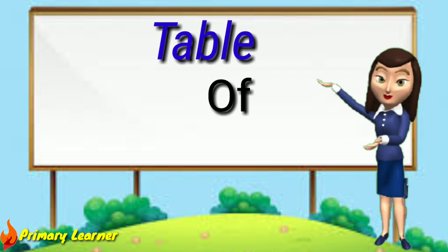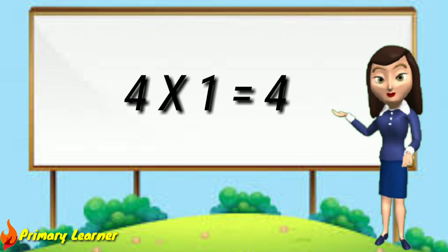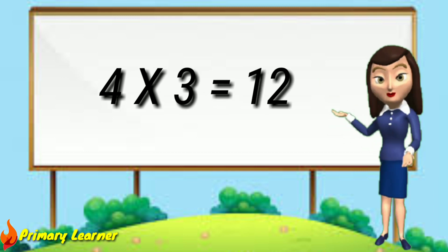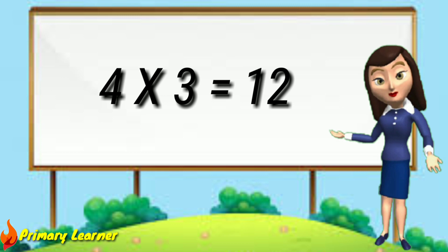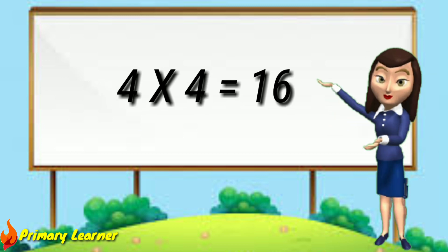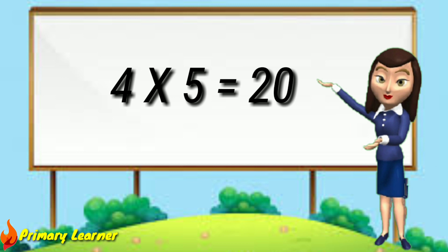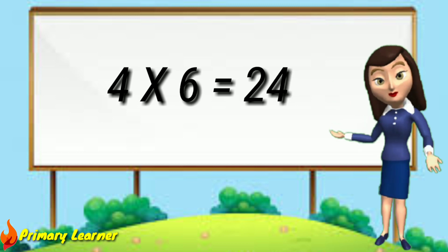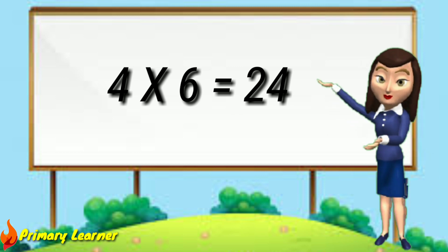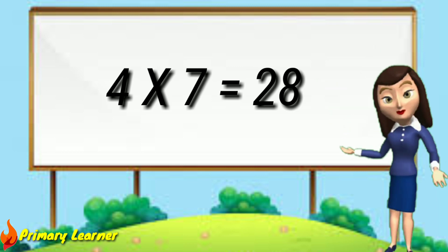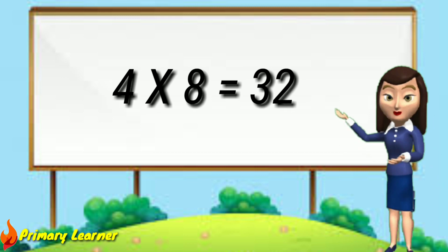Table of four. Four ones are four. Four twos are eight. Four threes are twelve. Four fours are sixteen. 4 fives are 20. 4 sixes are 24. 4 sevens are 28. 4 eights are 32.